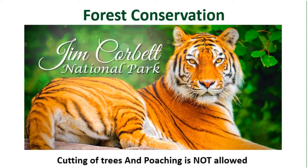Our government has set up national parks and wildlife sanctuaries. These are places where cutting of trees and poaching — which is the illegal killing of animals — is banned. One such place is the Jim Corbett National Park in Uttarakhand, which was set up in 1961 to protect the tiger.